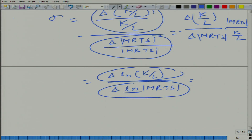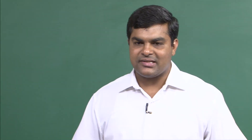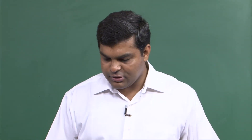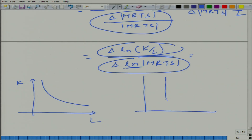Without using the concept of profit maximization — since we have not used it yet — let me again explain what elasticity of substitution is, this time graphically. We have two graphs: one showing an isoquant for the Cobb-Douglas function, and one showing an isoquant in the case of perfect complement inputs.